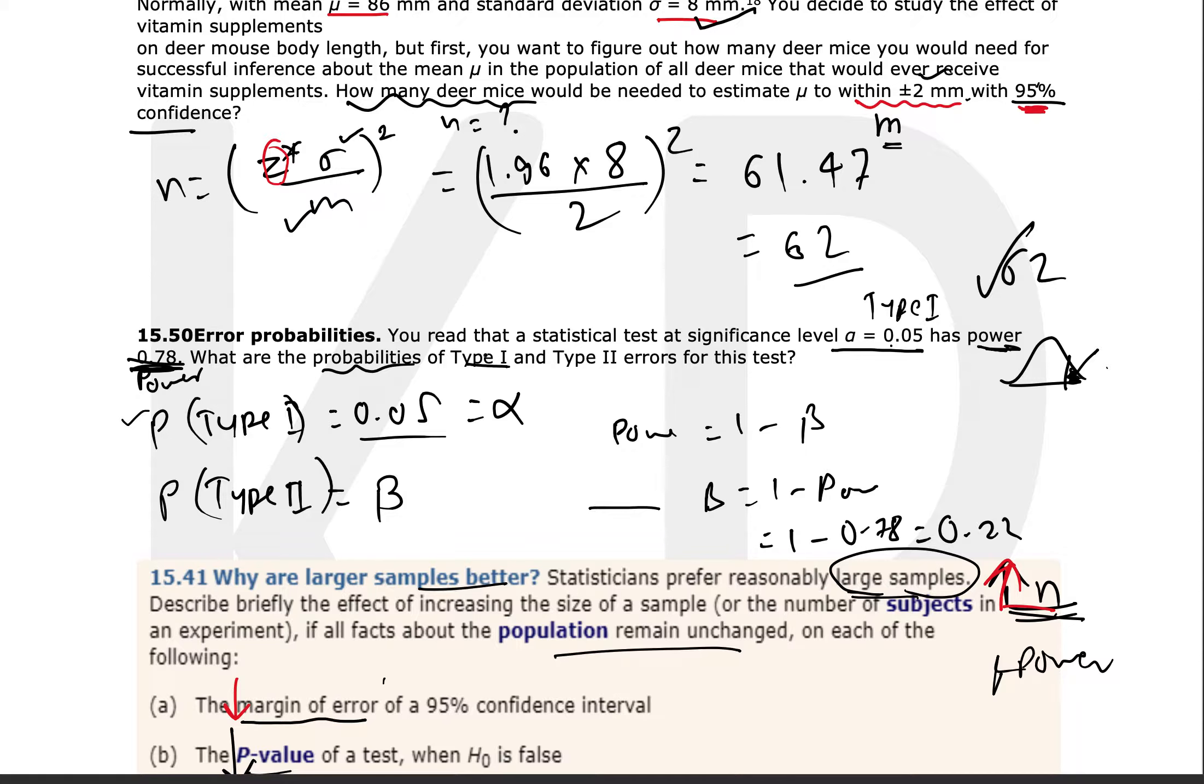The second is asking about Type 2 errors. Now Type 2 error we know is beta, but we don't know exactly the value of it—we have to calculate that. But we do know that power is nothing but 1 minus beta, and power is given to us in this case, 0.78. So just 1 minus 0.78, that's 0.22, that's nothing but your beta value.